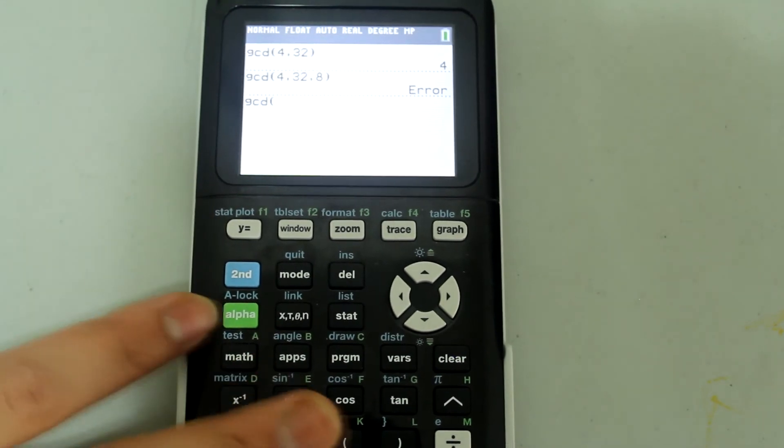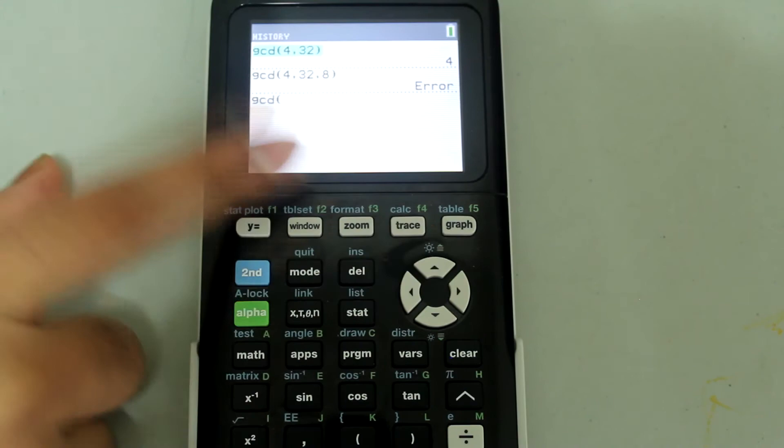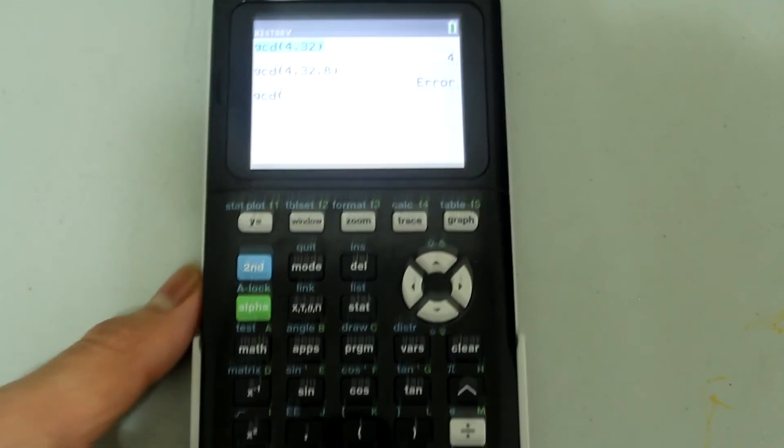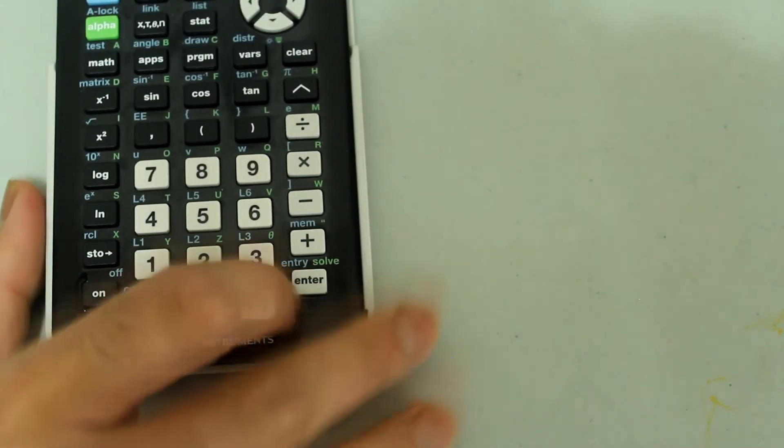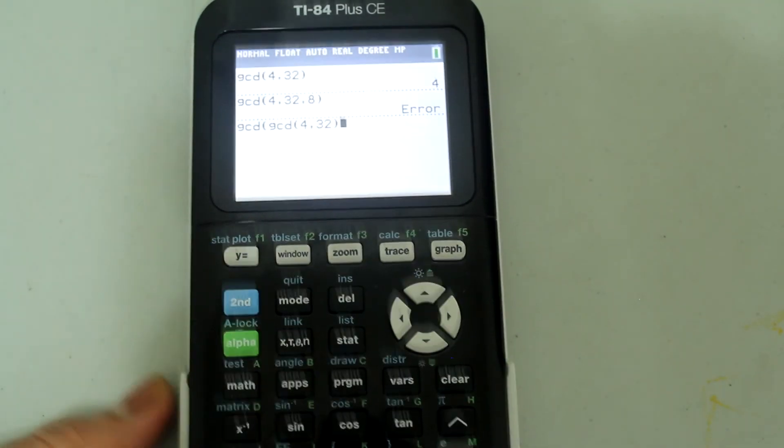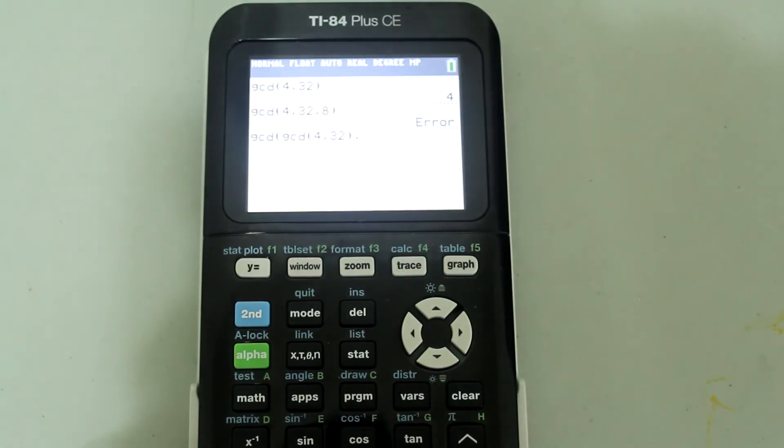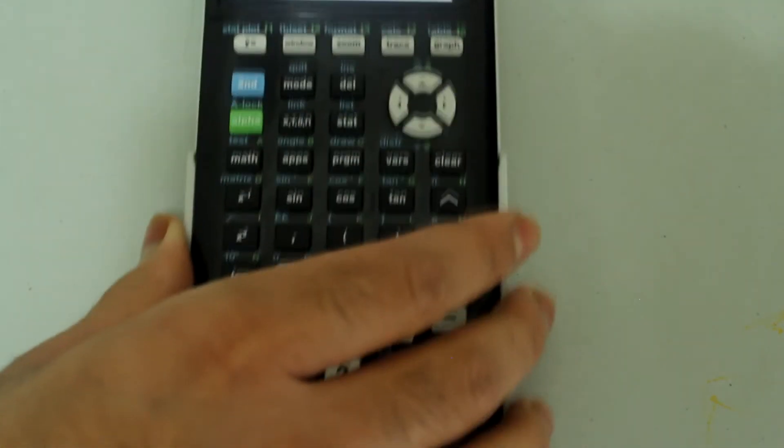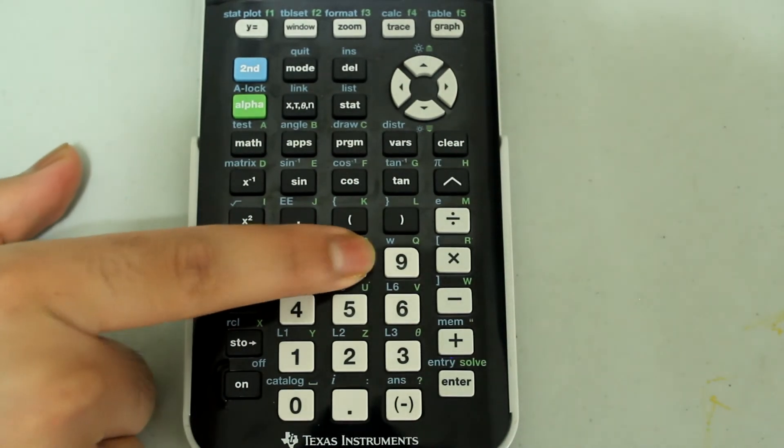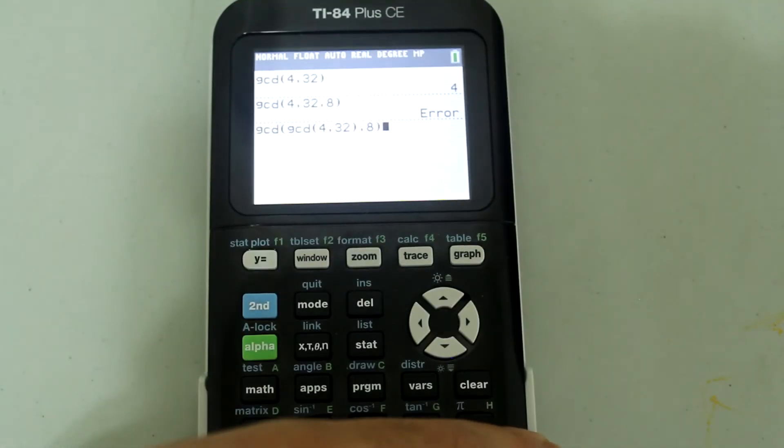And then what I'm going to do is arrow up again and select this entry and then press enter. So it looks like this now. And then I'm going to use a comma like this, and then just type in 8 and then close the parenthesis. So the entry looks like this now.